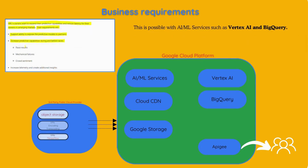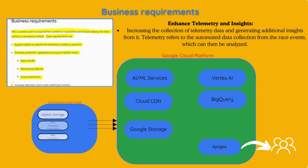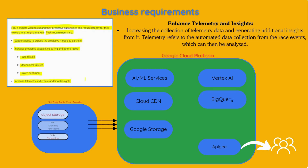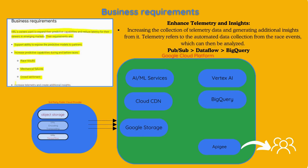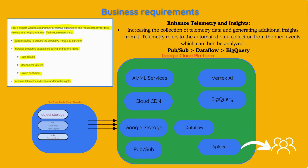Requirements also include increasing predictive capabilities during and before races — covering race results, mechanical failures, and crowd sentiment — and increasing telemetry to create additional insights. Telemetry refers to the automated data collection from race events, which can then be analyzed. A real-time data processing pipeline is needed for this requirement, using Cloud Pub/Sub, Cloud Dataflow, and Cloud BigQuery.